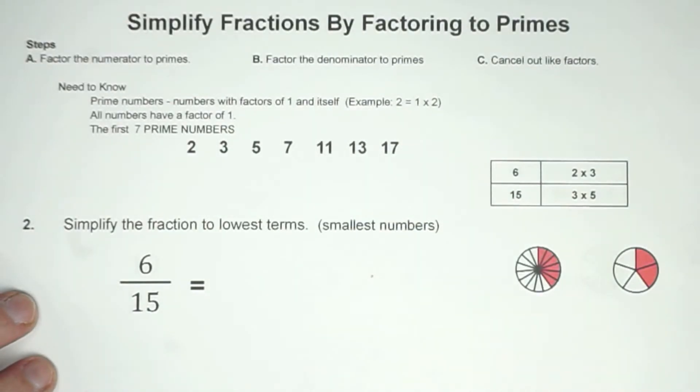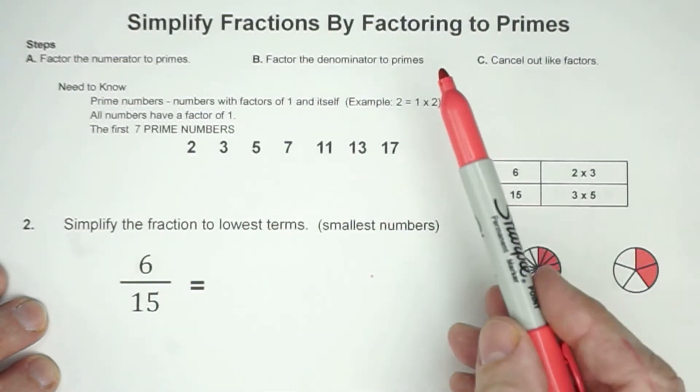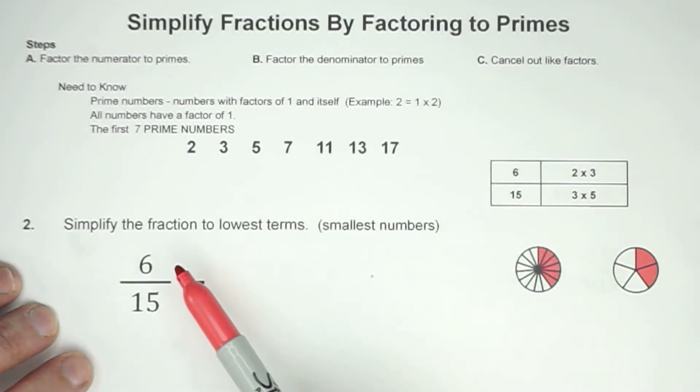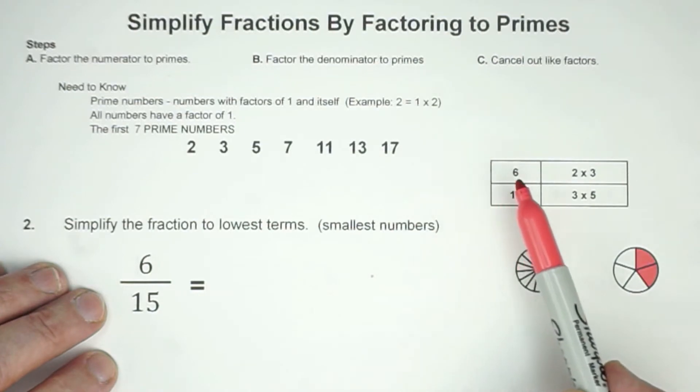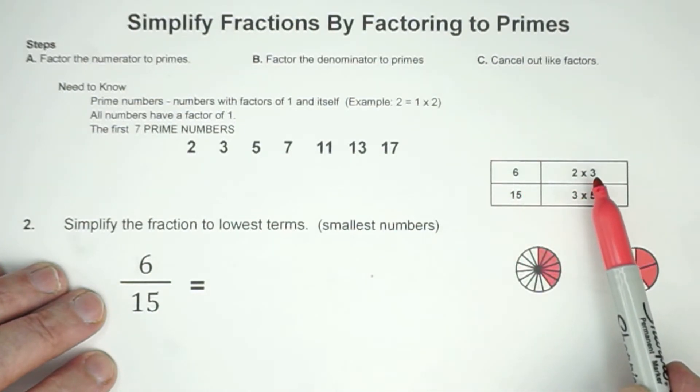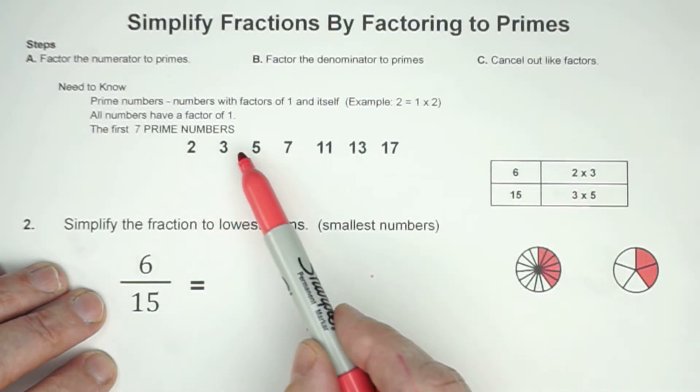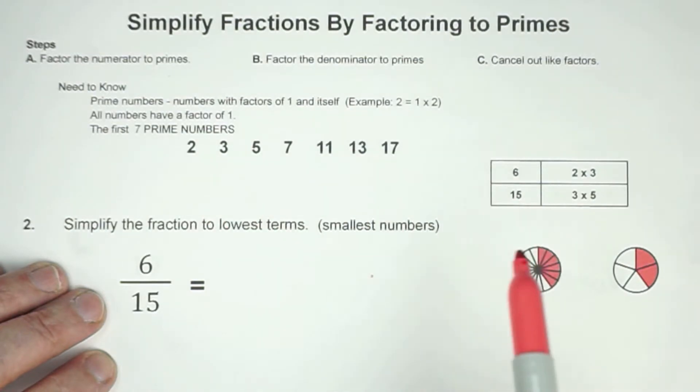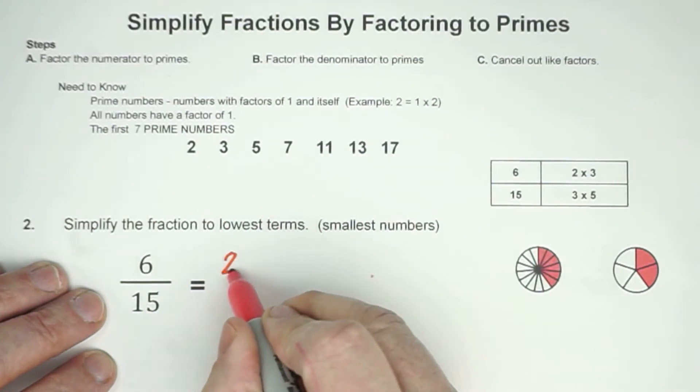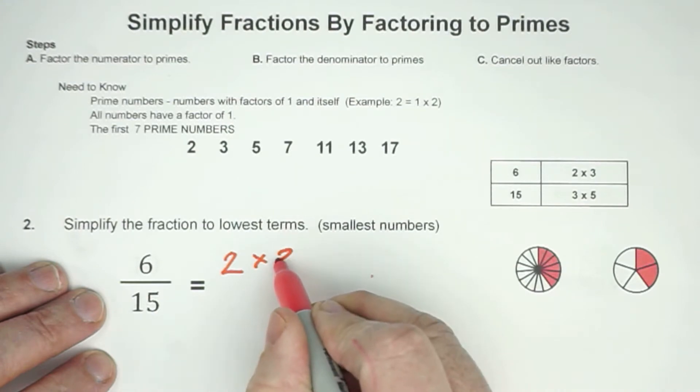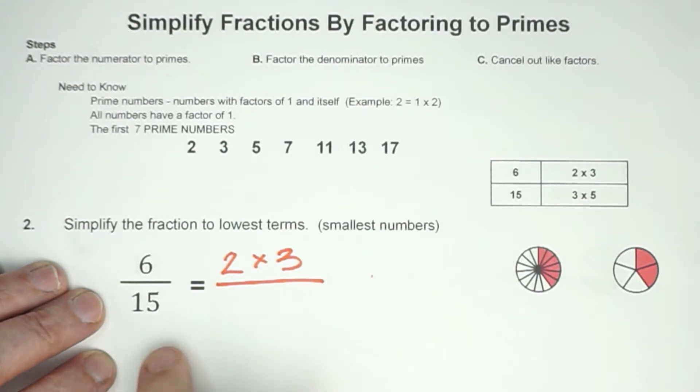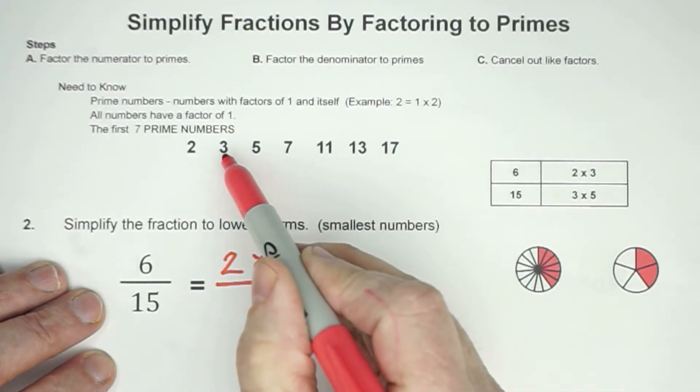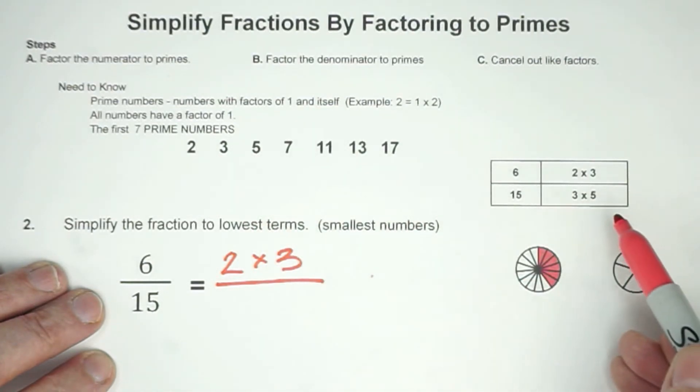Let's try another example. 6 fifteenths, and we're going to factor to primes. Let's start with our top. 6 would be 2 times 3. Notice again that these are prime numbers. And then 15 would be 3 times 5. Notice also that 3 and 5 are both primes. In other words, 3 times 5 is 15.